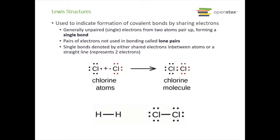Now we're going to look at Lewis structures. These are used to indicate the formation of covalent bonds by sharing electrons. What generally happens with a simple Lewis structure is that the unpaired or single electrons from two atoms pair up to form a single bond.